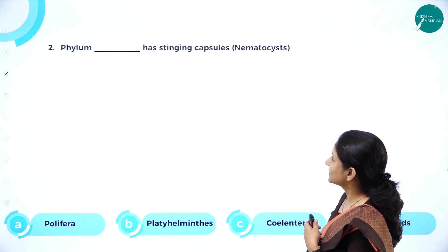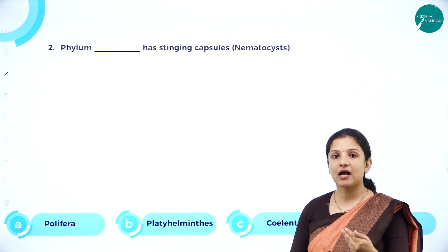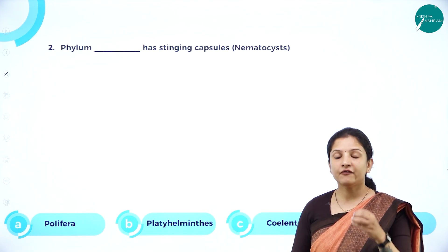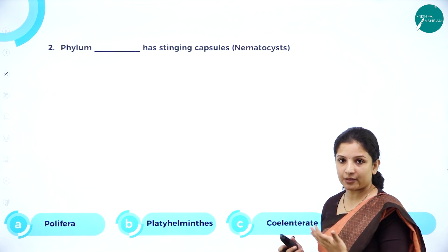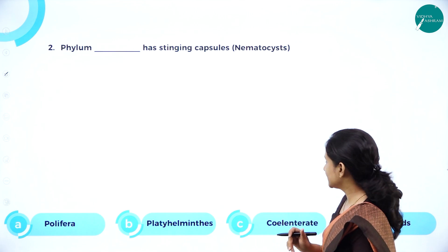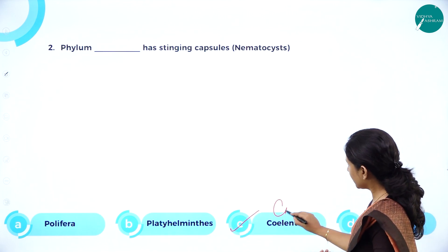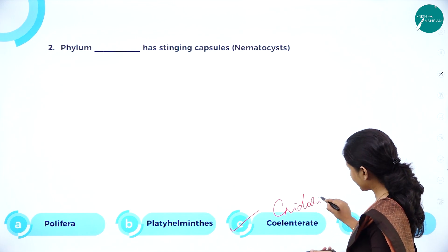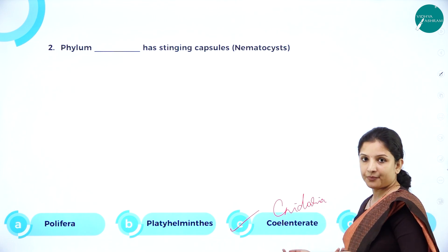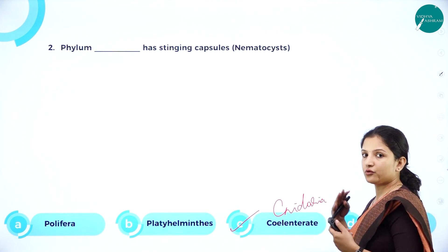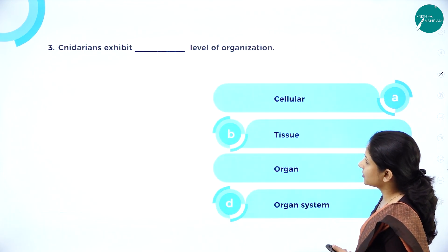Next MCQ: Phylum dash has stinging capsules. Or the question may be framed as: phylum dash has nematocysts, or phylum dash has cnidoblasts. For all of these, the answer is Coelenterata — or the option may be given as Cnidaria, which is also correct since Coelenterata are also called cnidarians.